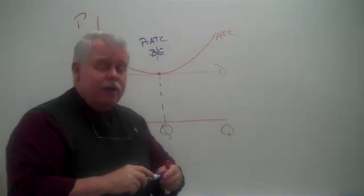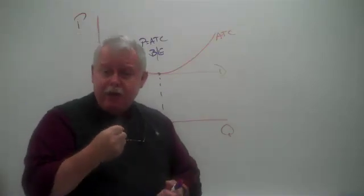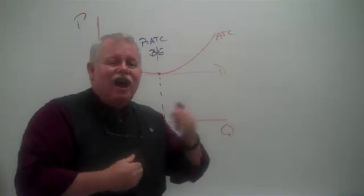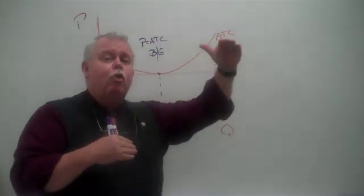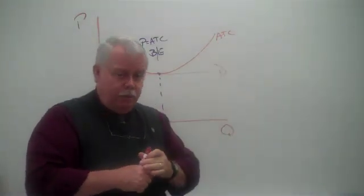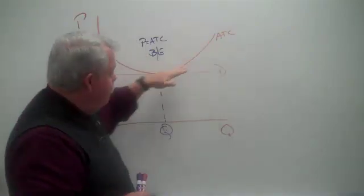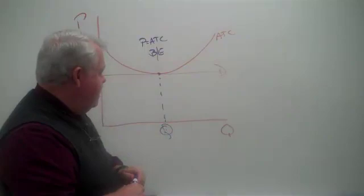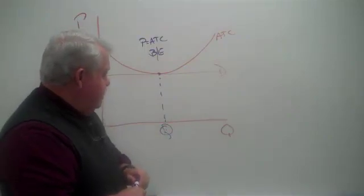Again, what does that mean? It means they're making enough profit, accounting profit, to stay in business. But they're not making any economic profit, profit over and above the normal rate of return. Okay? When this curve is tangent to this curve or line, okay?